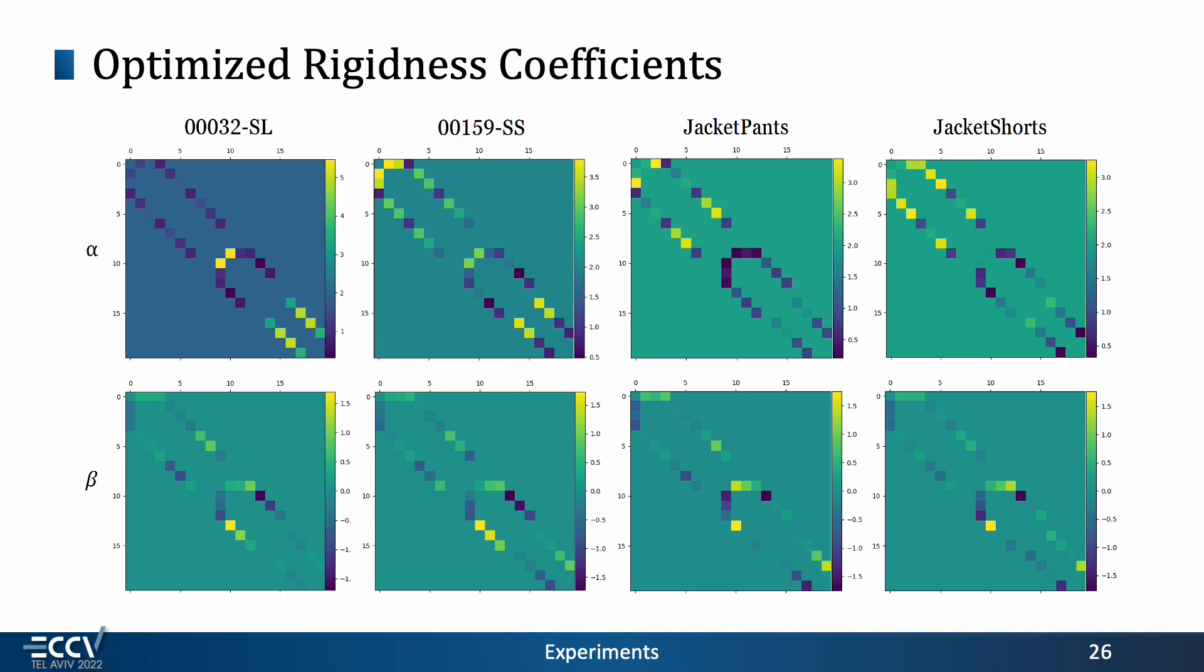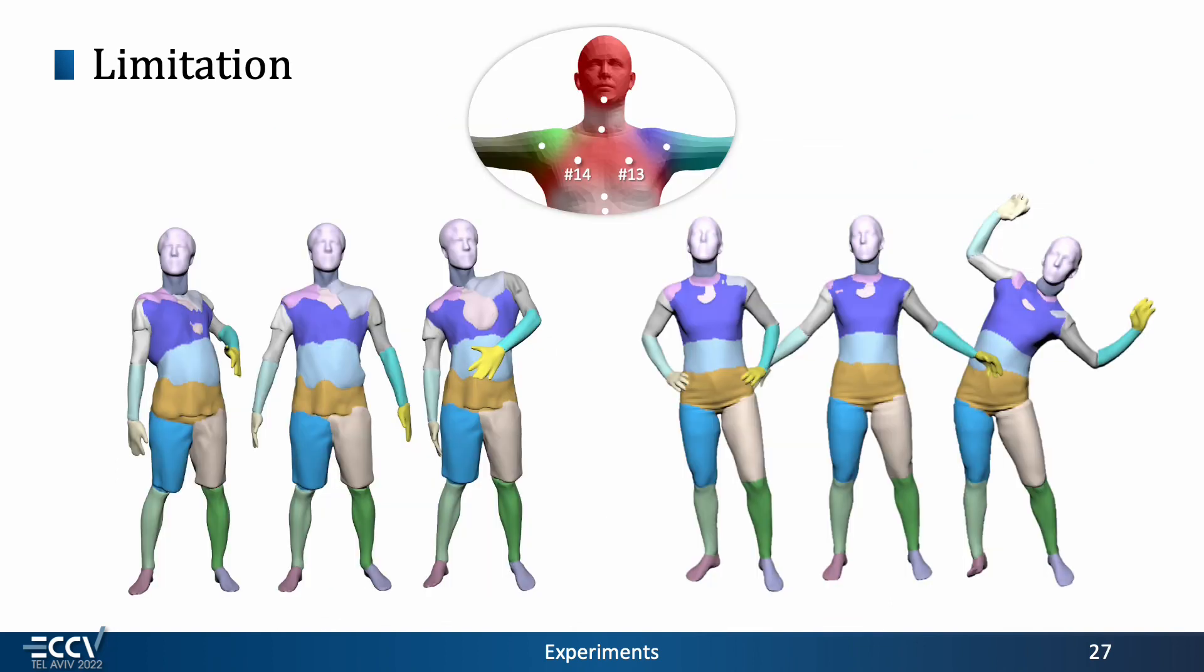After optimization, the scaling matrices alpha are symmetric, while the bias matrices beta are skew symmetric. Since the 13th and 14th joints of SMPL are too close to the spine, our method learns a small chest and large shoulders.